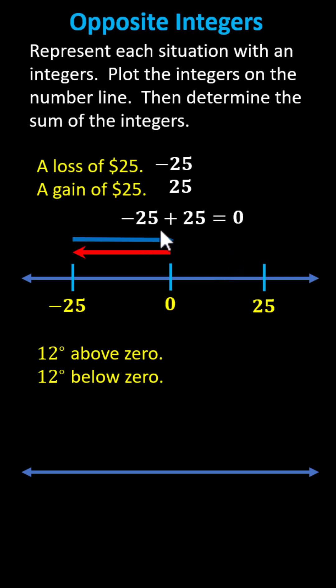In general, the sum of opposites is always zero. For the second example, we have 12 degrees above zero and 12 degrees below zero. For 12 degrees above zero, we use the integer positive 12. For 12 degrees below zero, we use the integer negative 12.